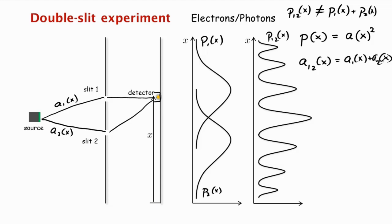And so once again, we see what we saw in the case of water waves, where P12 of x is A12 of x whole squared. It's the square of this probability amplitude, which is not equal to A1 of x squared plus A2 of x squared, which is, of course, P1 of x and P2 of x.